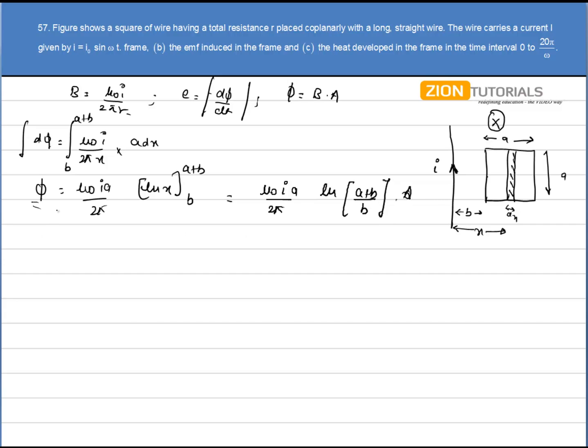Now here is my flux. I have to calculate EMF that is given by d phi by dt. So it can be written as mu not i into A into 2 pi, natural log of A plus B by B, d by dt of it.